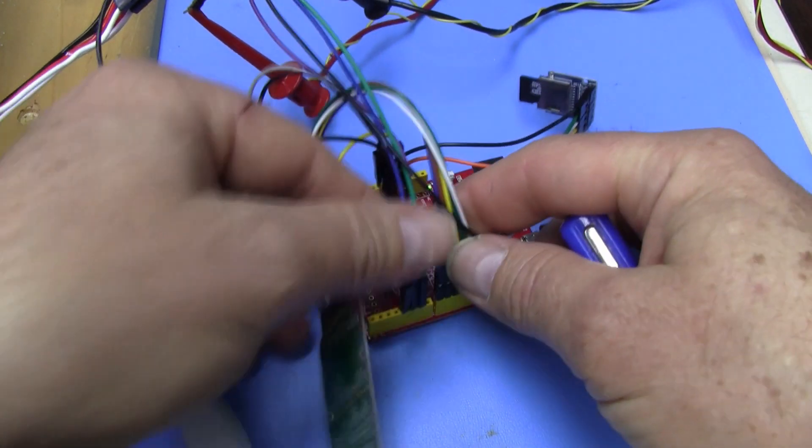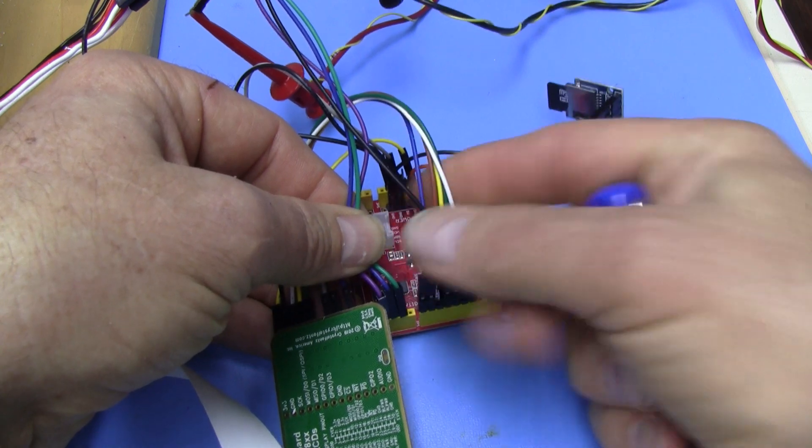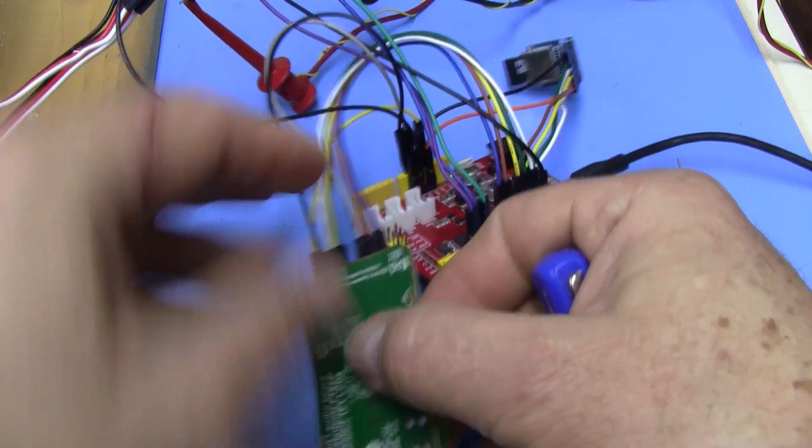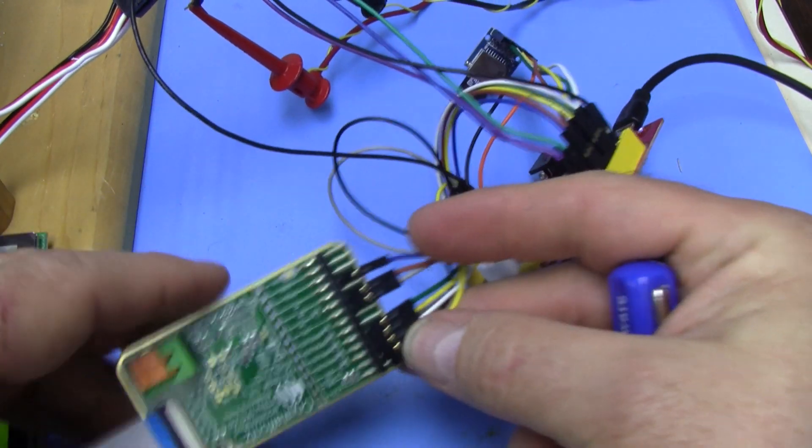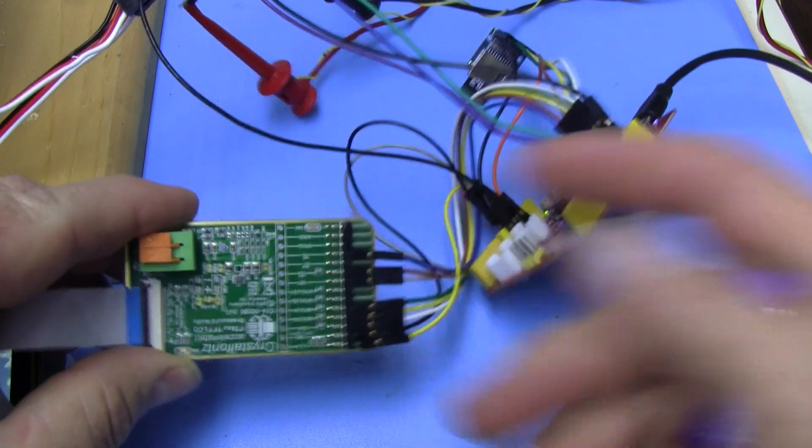Then this next bank of wires, this bank right here, goes over to this adapter board for the FTDI.